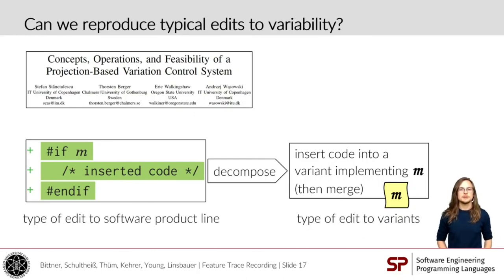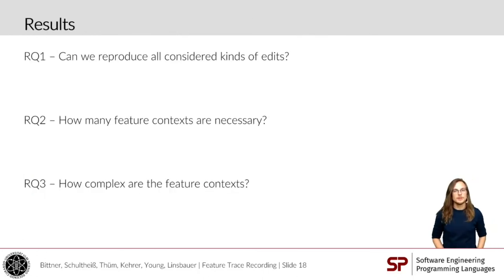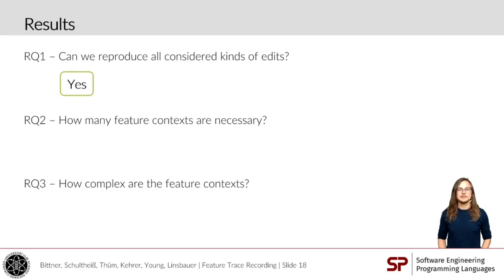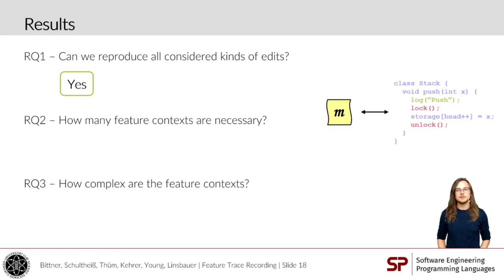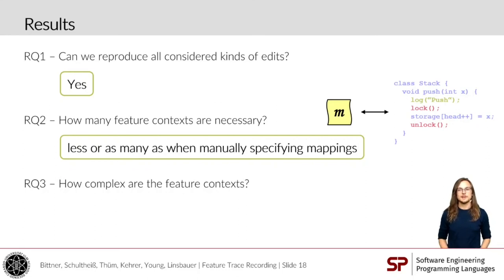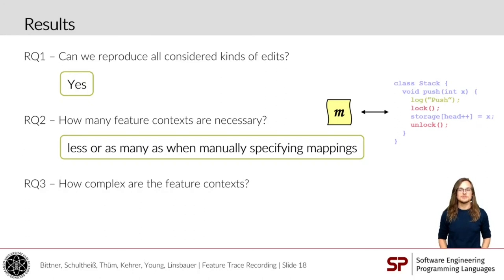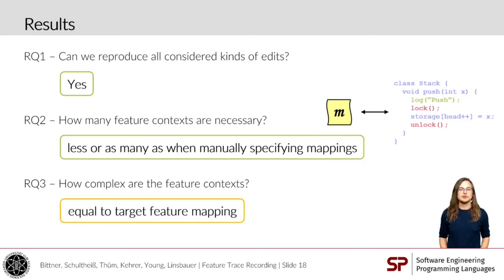For this kind of edit, we see that it can be reproduced by inserting the code to a variant implementing Feature M, under the Feature Context M, such that the corresponding feature will be derived by Feature Trace Recording, and merging afterwards. First, we were interested if Feature Trace Recording indeed supports all types of considered edits from the classification, and we found yes, it does. Second and third, we were interested in the benefits of Feature Trace Recording, and if it would be really easier to specify a Feature Context rather than assigning features to source code manually. We found that fewer or as many Feature Contexts are required as when directly specifying mappings manually — so we have a reduction. And we found the formulas required for Feature Contexts are about as complex as the mappings we want to derive.